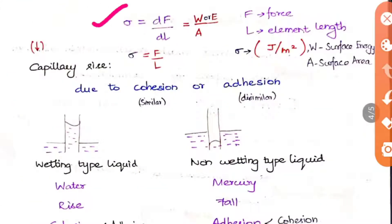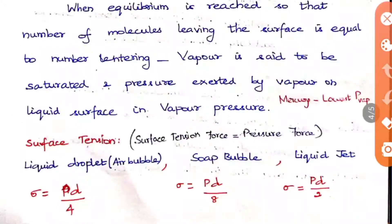The formula for surface tension is sigma = dF/dL (or F/L). It can also be written as W/A or E/A, where W or E is surface energy and A is surface area. The unit of surface tension is joules per meter squared. Problems will be asked from the surface tension values for different cases.